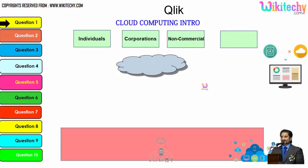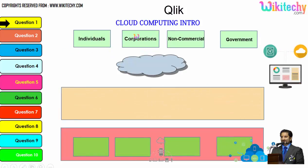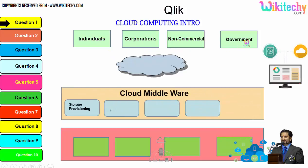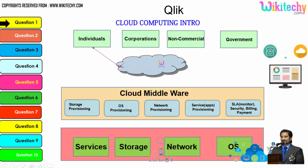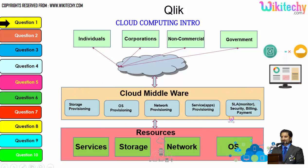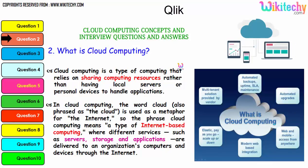There are different types of users: individuals, corporations, non-commercial people, and government. From any of these users, they are able to access services, storage, network, or operating systems via cloud middleware. These are specialized software tools provided by the cloud service provider to allow end users to access resources. This is how the cloud computing architecture works.